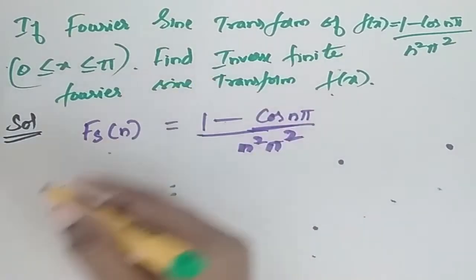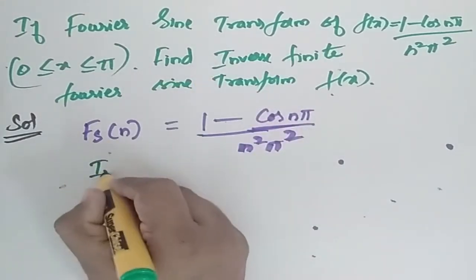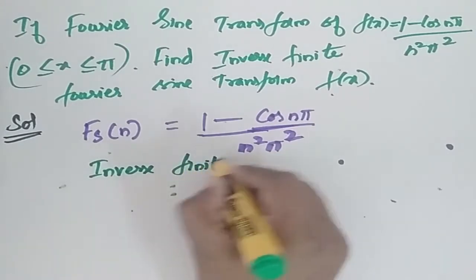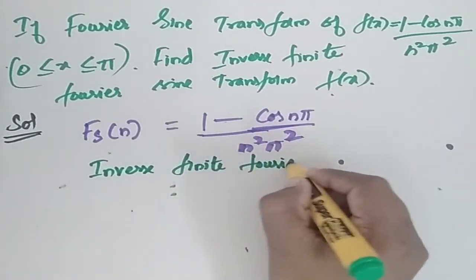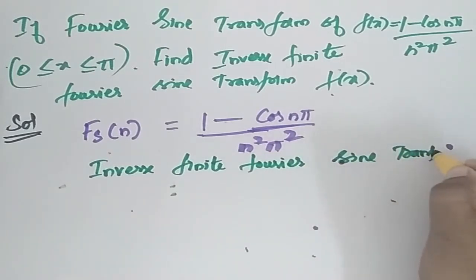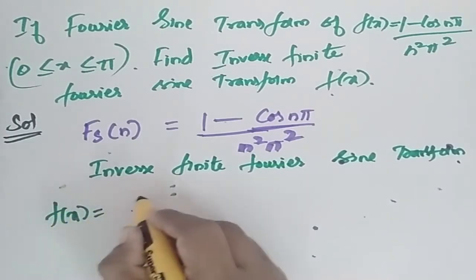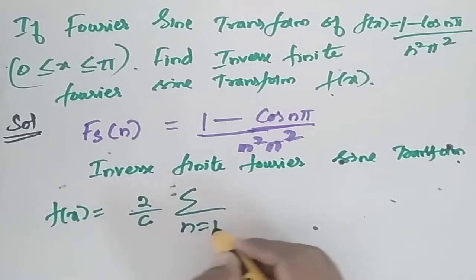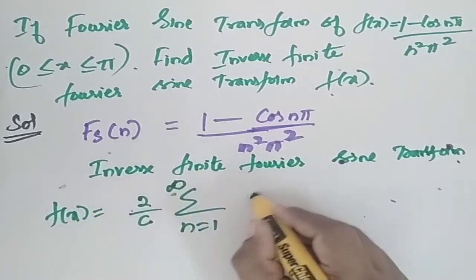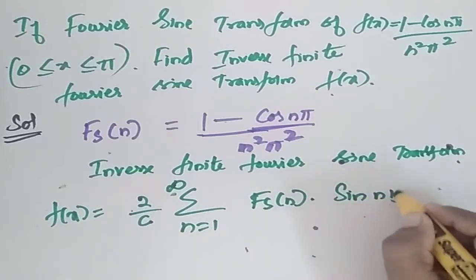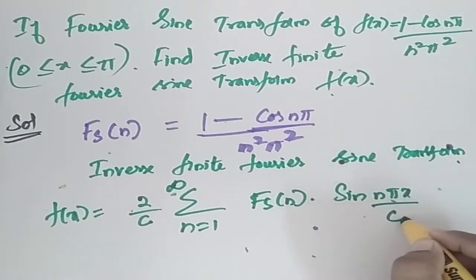Now, using the formula for the inverse finite Fourier sine transform: f(x) is equal to (2/c) times the summation from n = 1 to infinity of f(n) times sin(nπx/c).